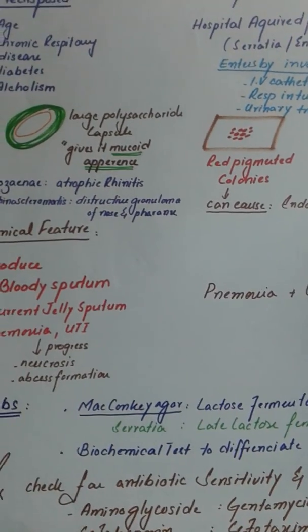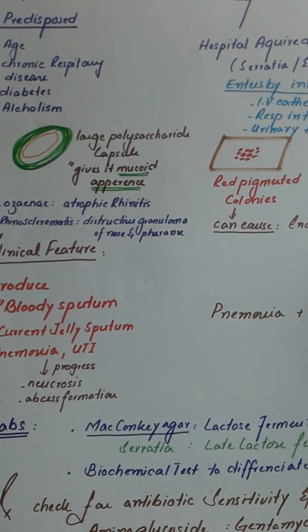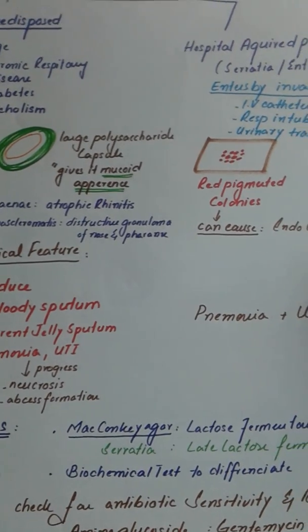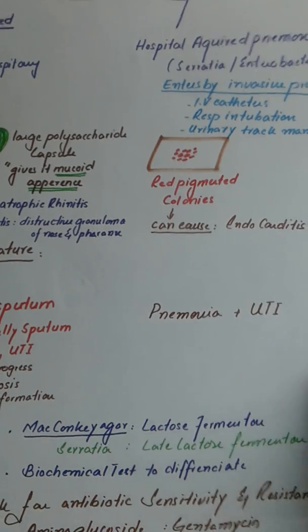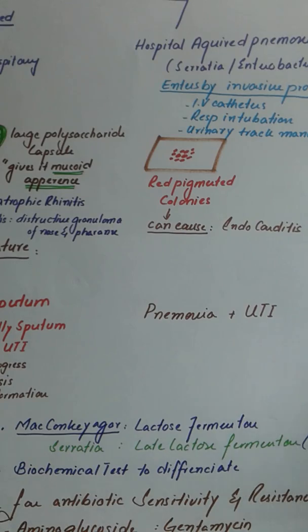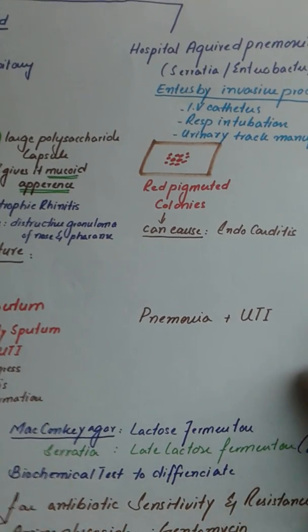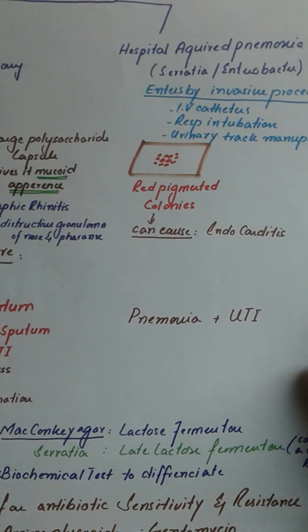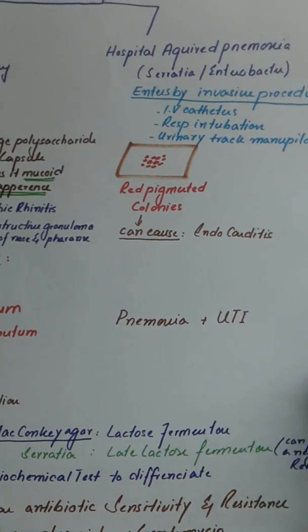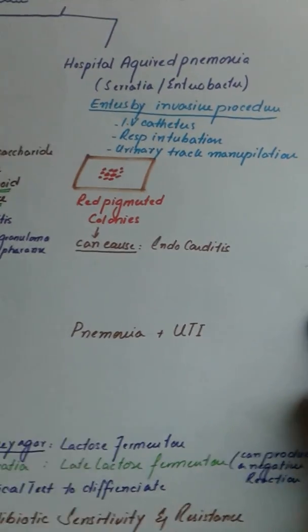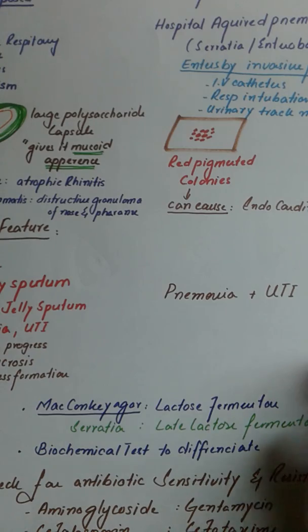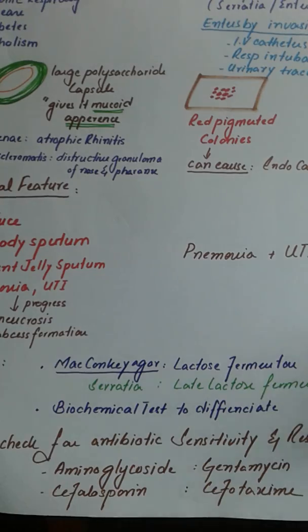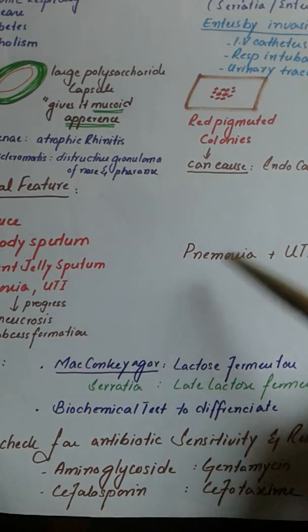On labs, these organisms are grown on MacConkey agar because they are lactose fermenters. All three organisms are lactose fermenters, but the differentiating feature is that Serratia is a late lactose fermenter, meaning it needs more time to ferment lactose and sometimes gives a negative reaction. Apart from that, a biochemical test can be done to differentiate between these three organisms.